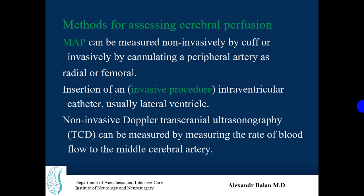Methods for assessing cerebral perfusion include: measuring mean arterial blood pressure non-invasively by cuff or invasively by cannulating a peripheral artery such as the radial or femoral; intraventricular catheter placement — an invasive method typically inserted into the lateral ventricle; and non-invasive measurement of blood flow velocity in the middle cerebral artery by transcranial Doppler ultrasonography.